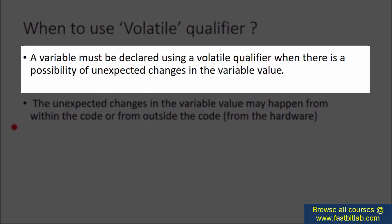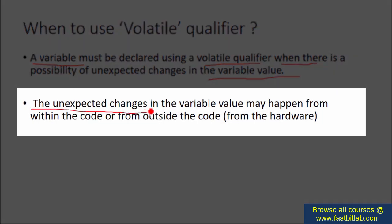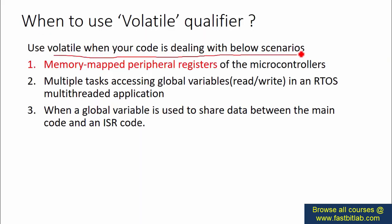When should you use the volatile qualifier? A variable must be declared using volatile when there is a possibility of unexpected changes in the variable value. We saw this in our pin read example — for the variable pin_status, there was a possibility of unexpected change by the user pressing pin PA0 at any time. The unexpected changes may happen from within the code, from outside the code, or from the hardware.